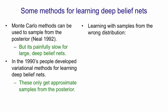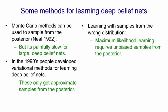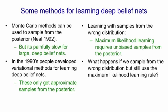Now, as we saw before, if we have samples from the posterior, maximum likelihood learning is simple. If we have samples from some other distribution, we could still use the maximum likelihood learning rule, but it's not clear what will happen. On the face of it, crazy things might happen if we're using the wrong distribution to get our samples.